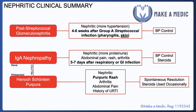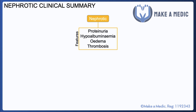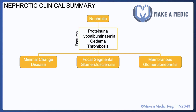HSP does tend to resolve spontaneously, but steroids may also be used. Regarding nephrotic syndrome, it's also worth noting that patients are at a massively increased risk of thrombosis. This is thought to be because they lose a large amount of antithrombin 3 within their urine, which is part of the natural anticoagulant mechanism within our body.